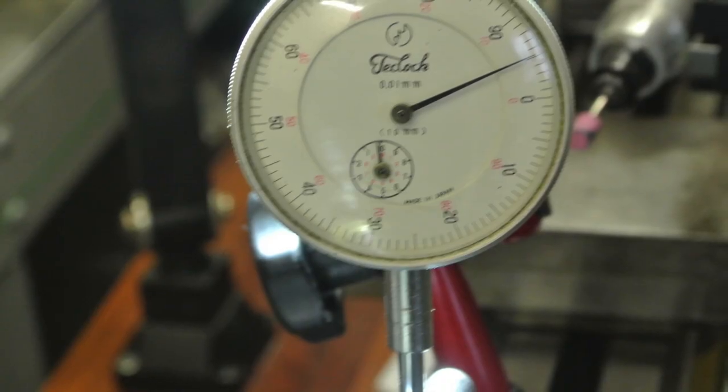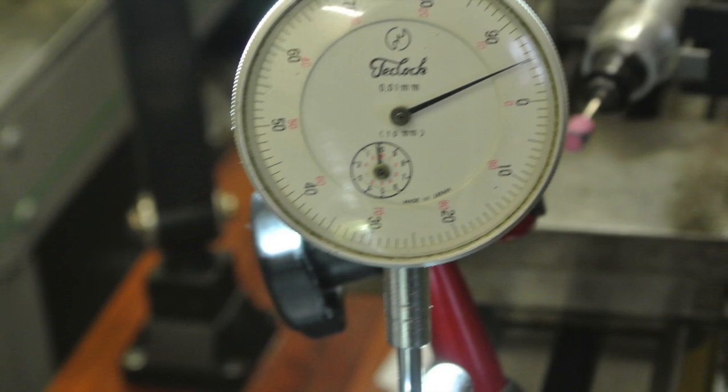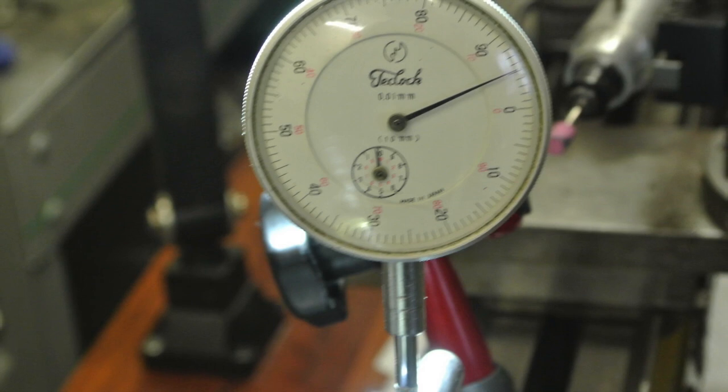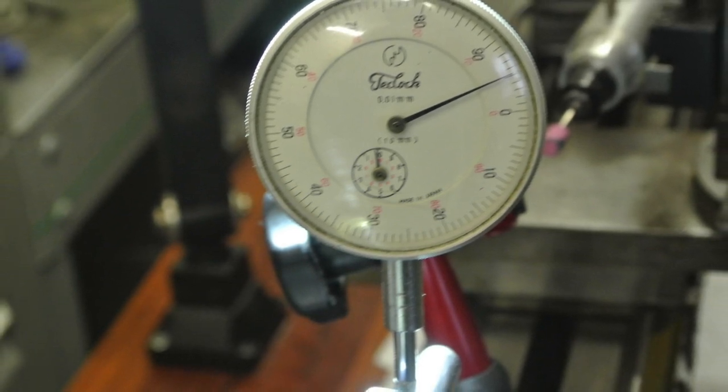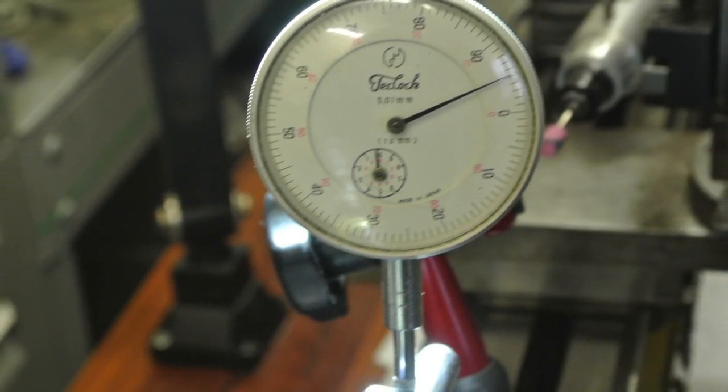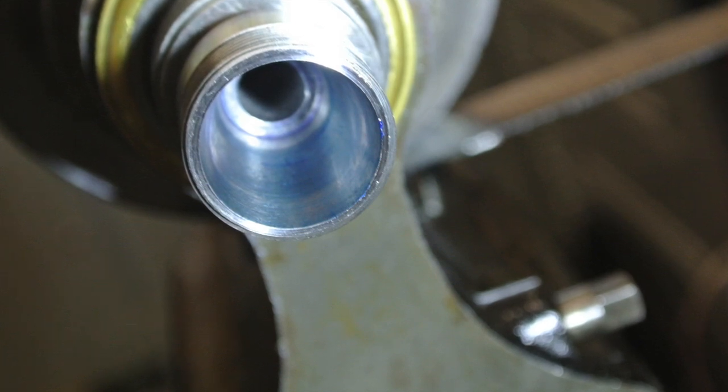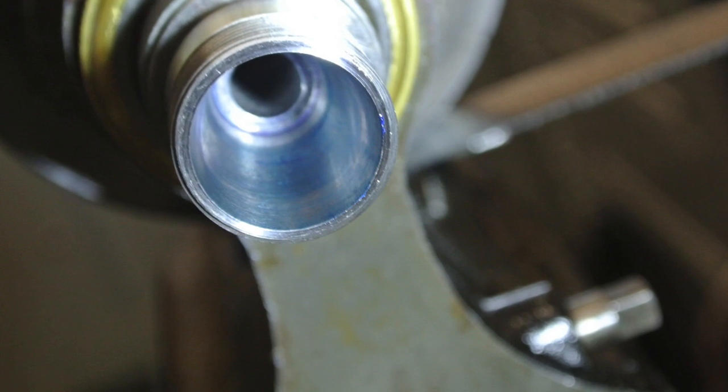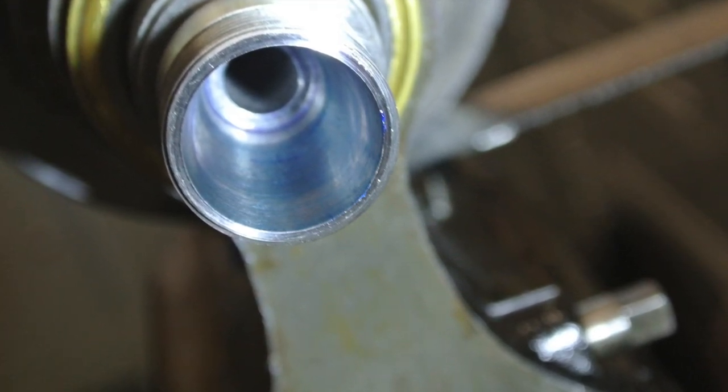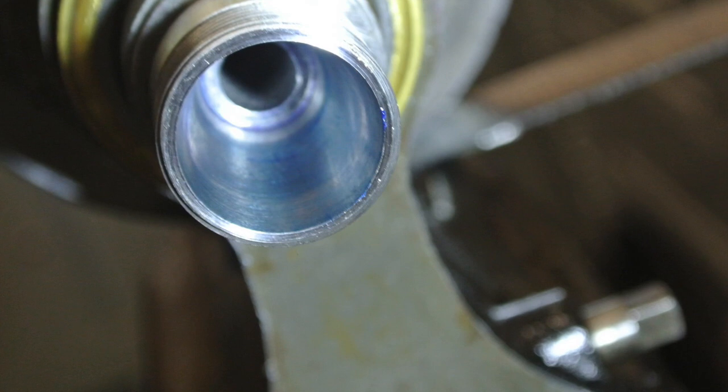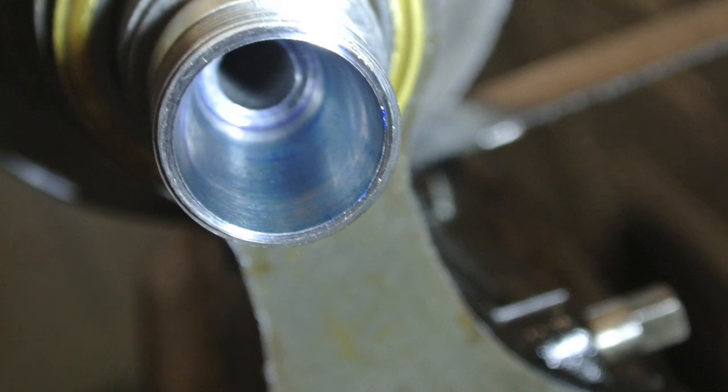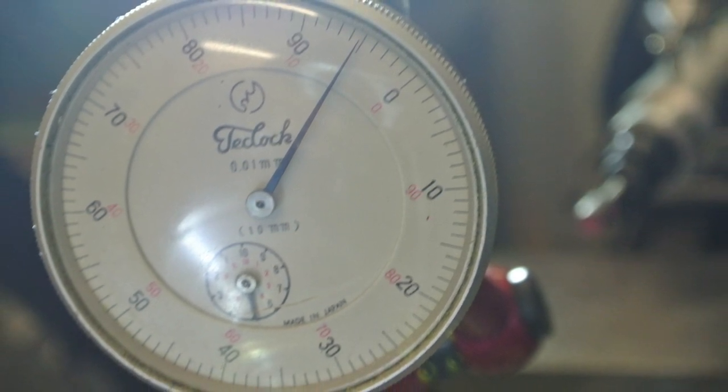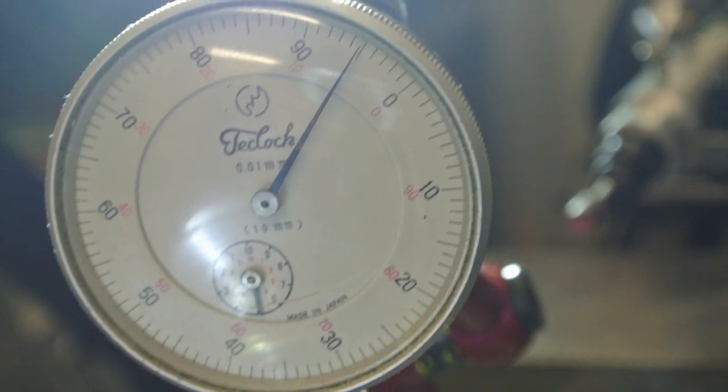A check can then be made with the dial gauge to see how concentric it is. In this case, concentricity reduced to 0.06mm. Light polishing of the inside with emery cloth wrapped on a dowel then produces a fine clean finish. Further improvement in concentricity is then down to 0.05mm.